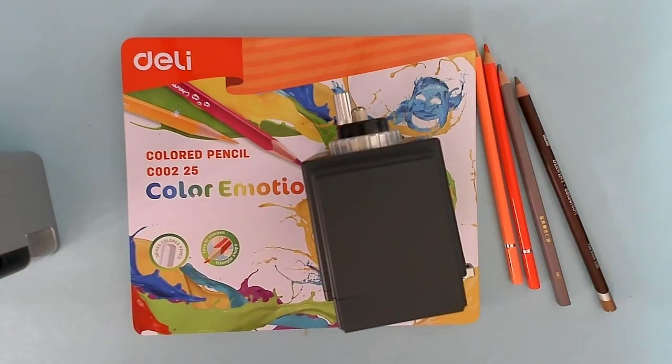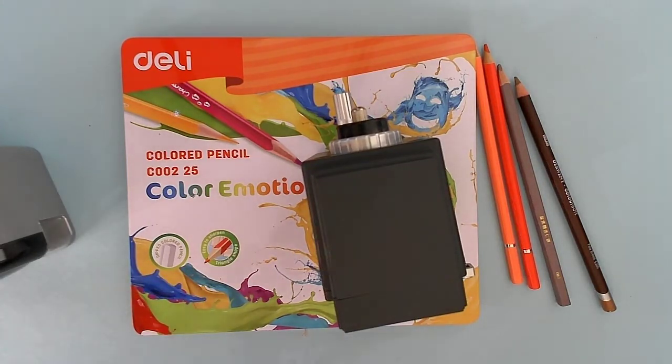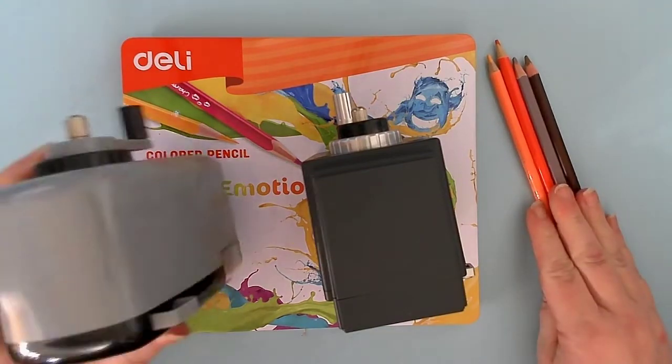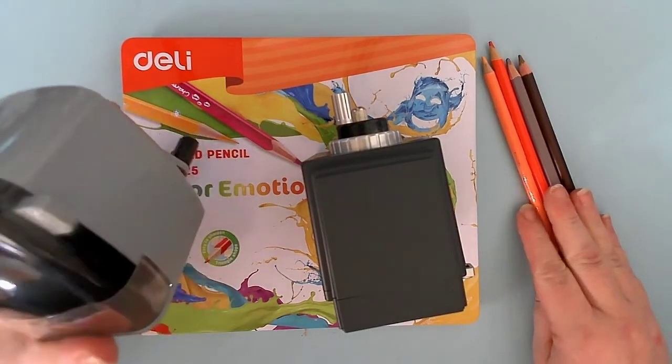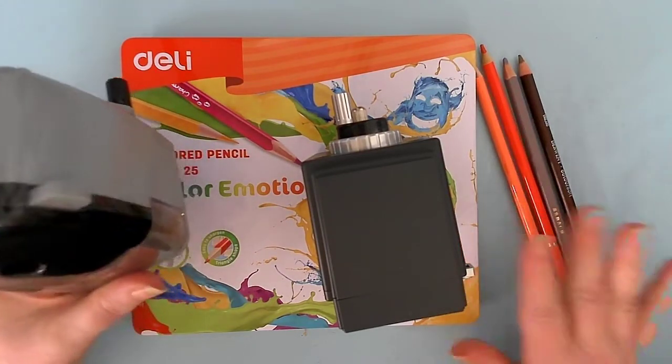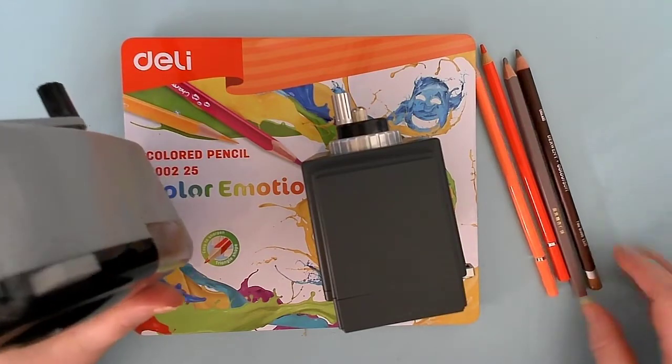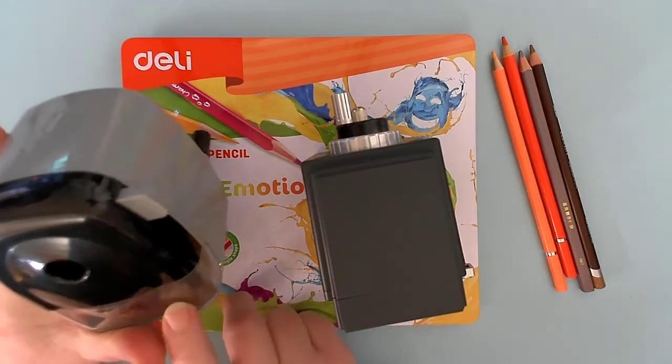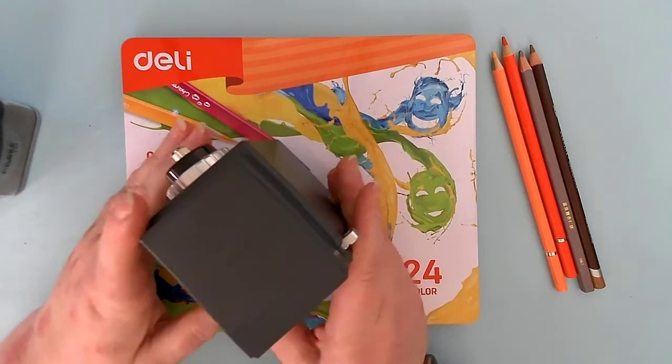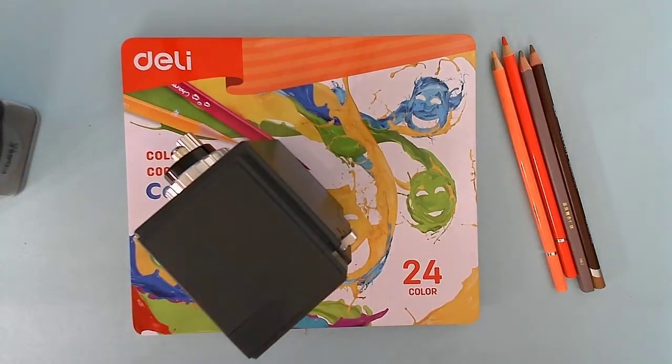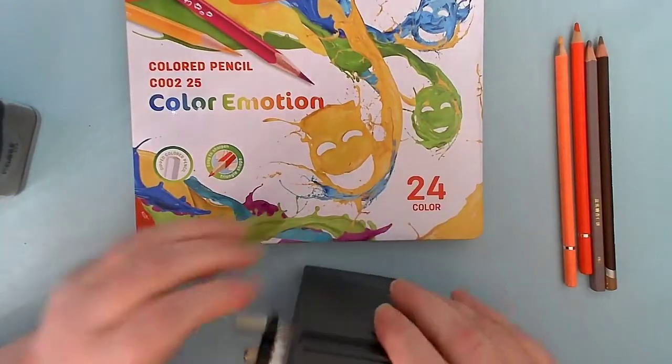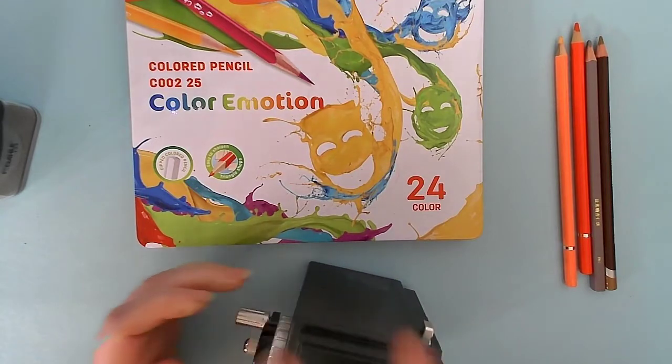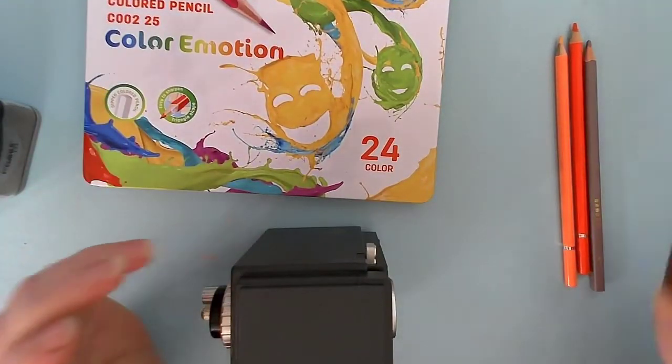We're going to grab a square Brute Fernals that I haven't sharpened too much, so you can see whether it sharpens really well or not. As you can see, it has not been sharpened. And we will grab one of the chunky chunky monkeys here, the Derwent Color Soft number 530. And of course we'll sharpen one of the triangles as well.